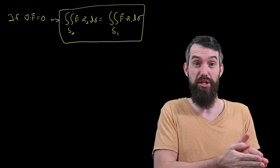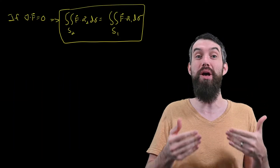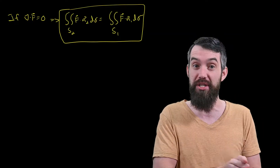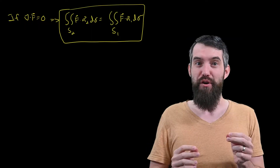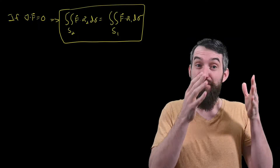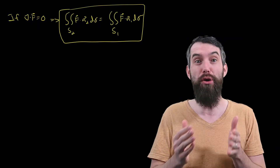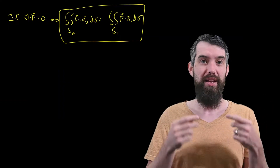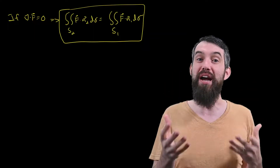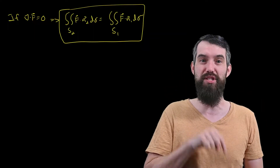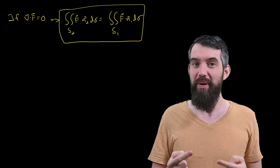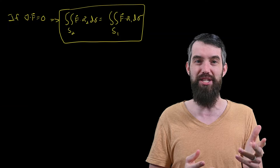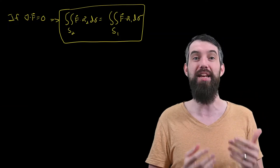In this video, we're going to talk about Gauss's Law, which is one of Maxwell's four equations that underlie the classical interpretation of electricity and magnetism. What we're really going to focus on is how we can use vector calculus, and in particular the divergence theorem from vector calculus, to derive Gauss's Law. This video is actually part of a vector calculus course — the link to the entire playlist is down in the description.